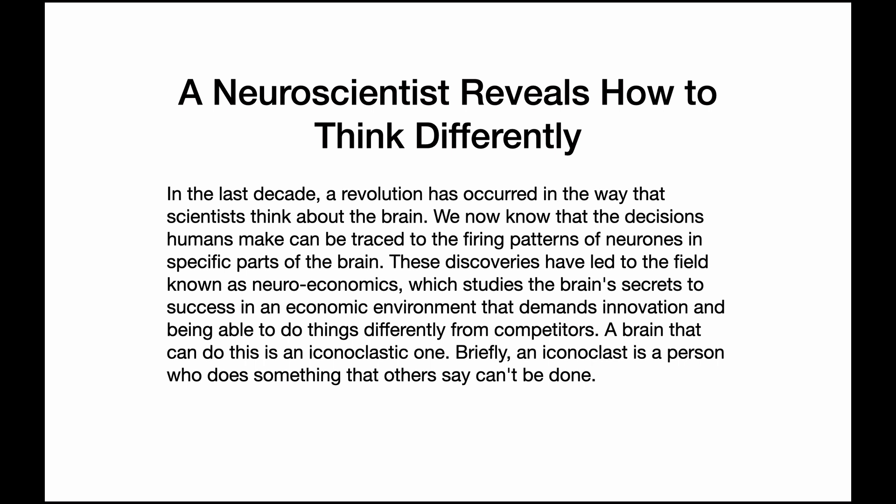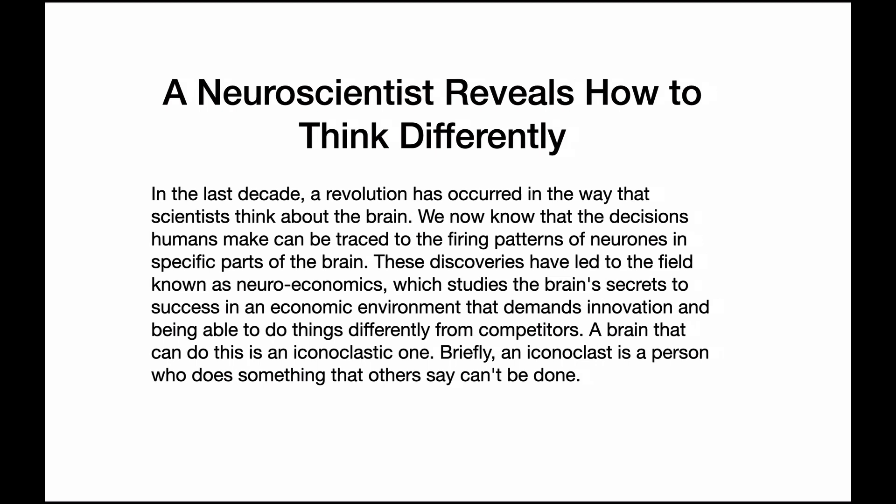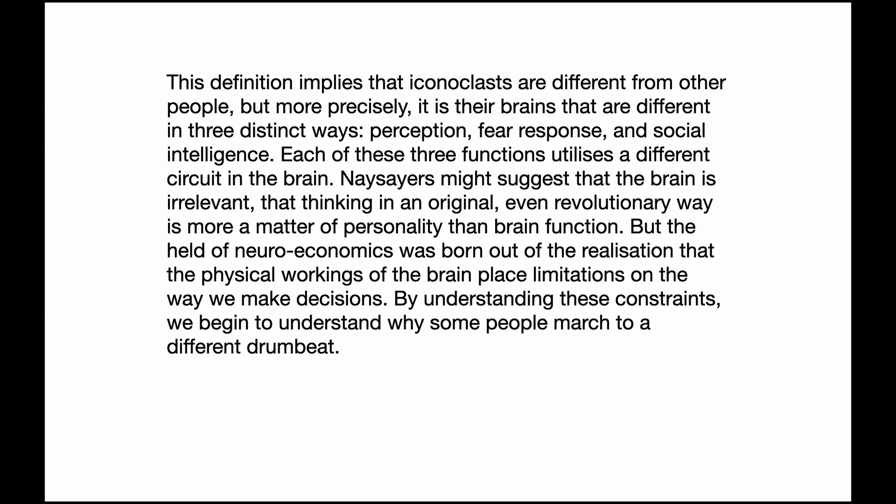Briefly, an iconoclast is a person who does something that others say can't be done. This definition implies that iconoclasts are different from other people, but more precisely, it is their brains that are different in three distinct ways: perception, fear response, and social intelligence. Each of these three functions utilizes a different circuit in the brain.